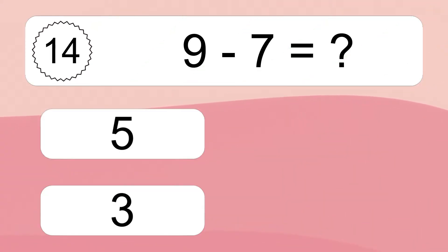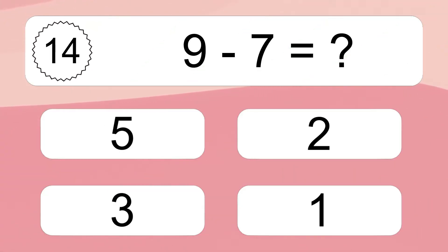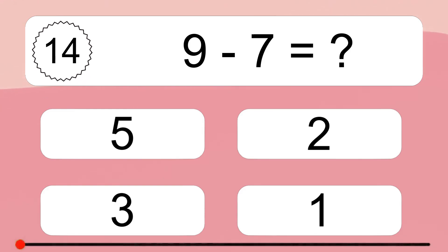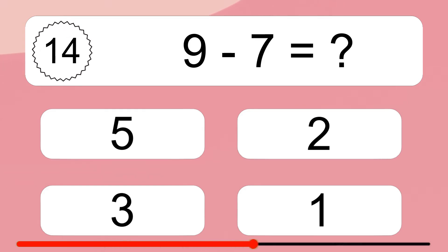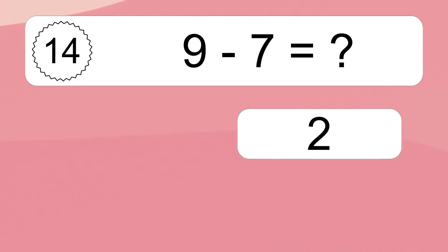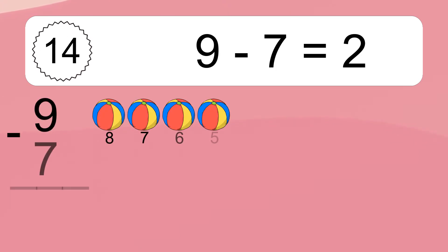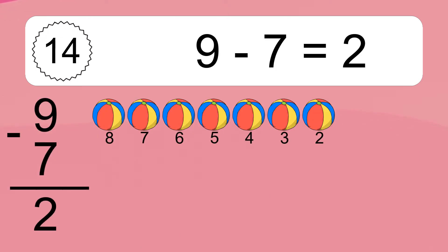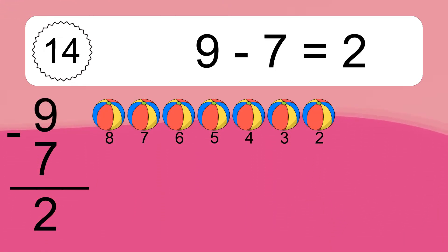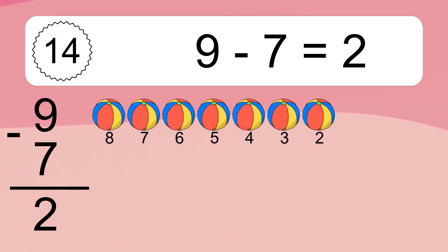9 minus 7 equals what? 9 minus 7 equals 2. Let's count it: 8, 7, 6, 5, 4, 3, 2.